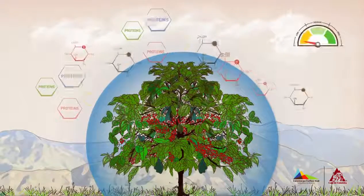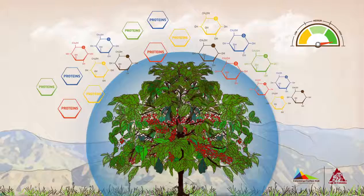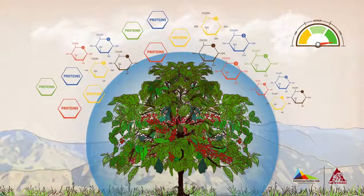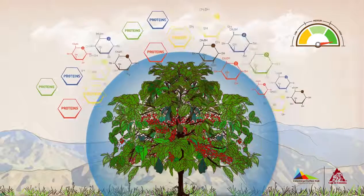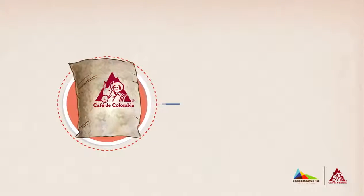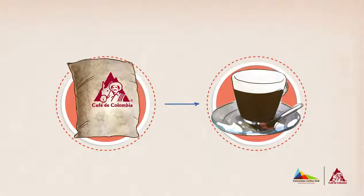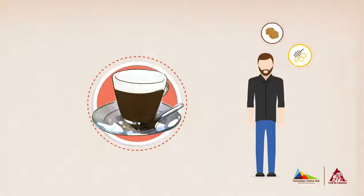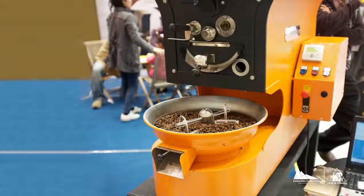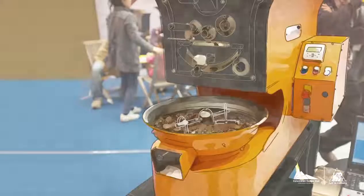This way, the development of certain groups of molecules such as proteins and sugars are favored in their quantity and also in their specific type. This feature is associated with the distinguishing sweet taste of some high-altitude coffees in Colombia, like Nariño. The high sugar content is one of the most important precursors in quality.